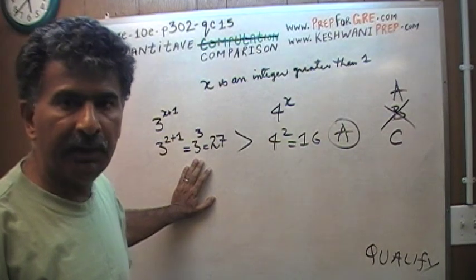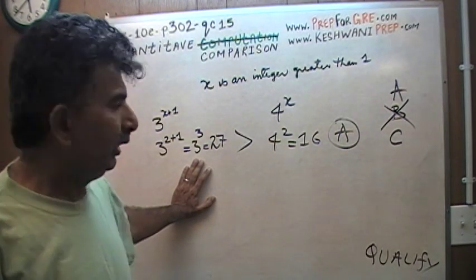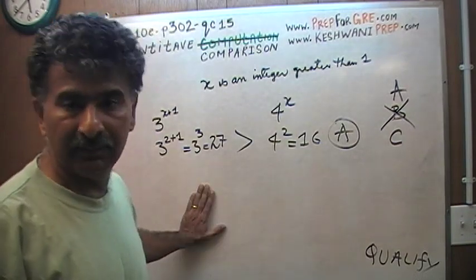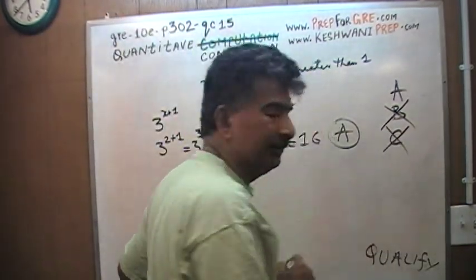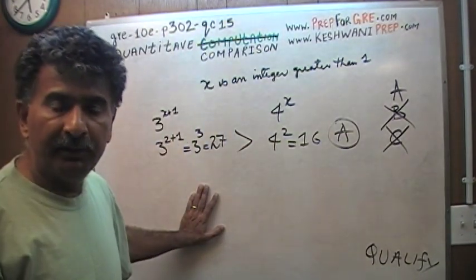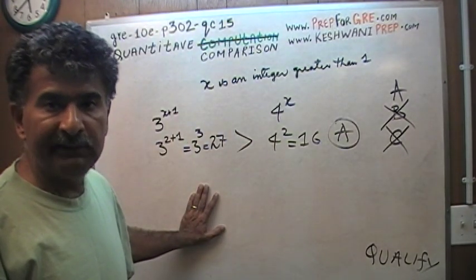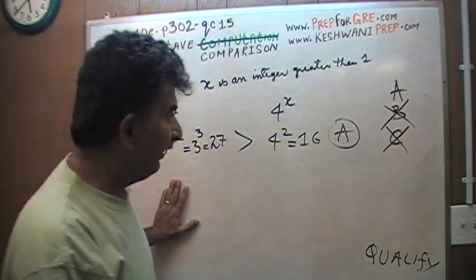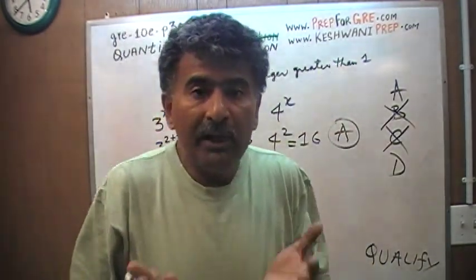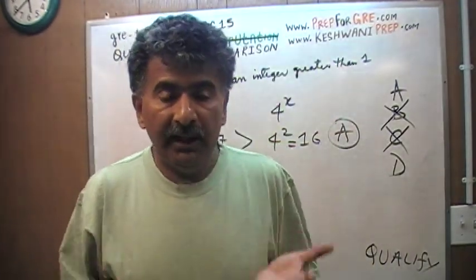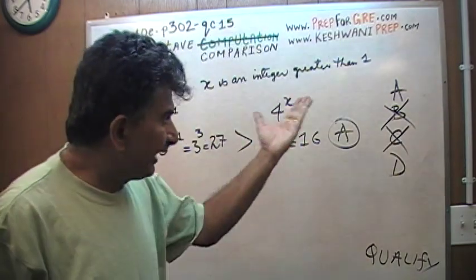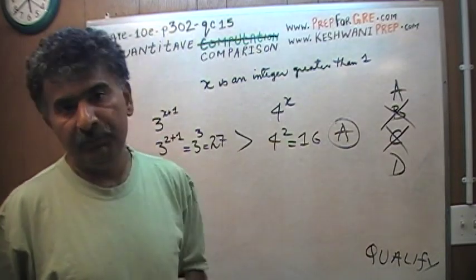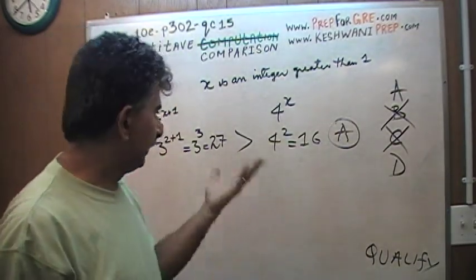B would have meant column B is always bigger, but I found one instance where it is not. Similarly, the answer cannot be C, because C would mean the two quantities are always equal — but they clearly are not equal here. So the answer has to be either A or D. This is why at least 50% of people should get it right — even by flipping a coin between A and D.